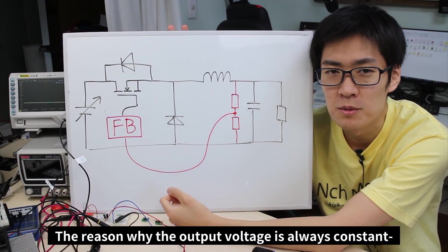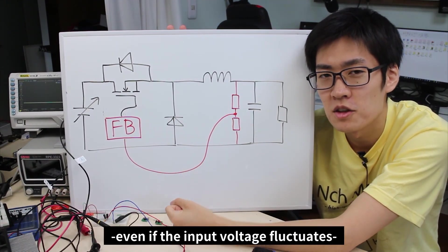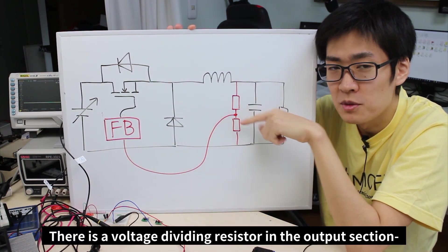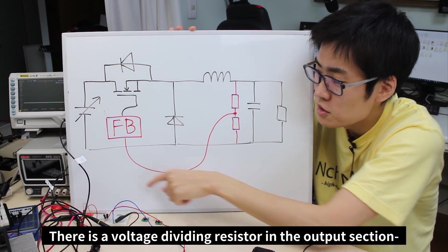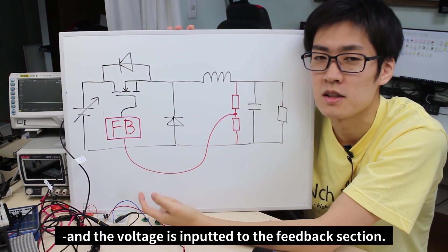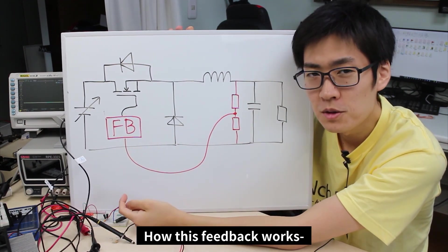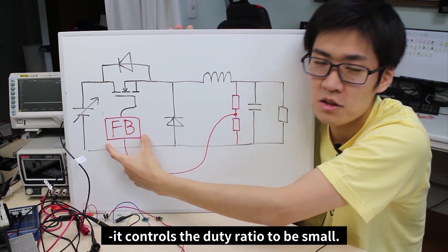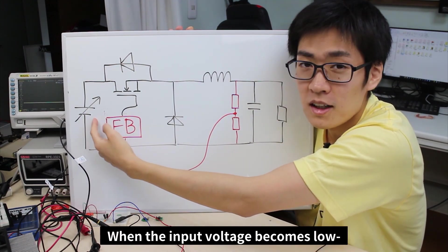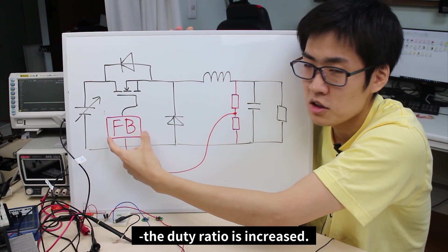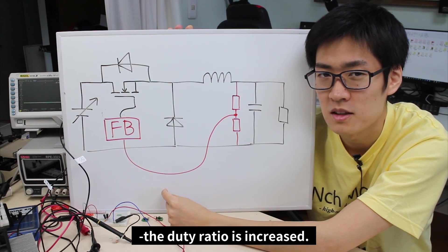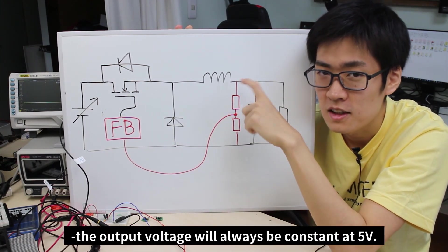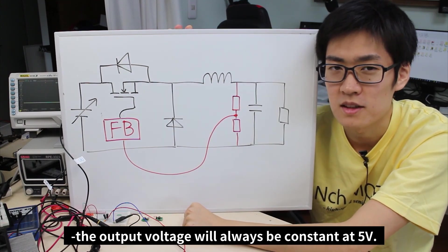The reason why the output voltage is always constant, even when there's fluctuation in the input voltage, is because we have feedback. There is a voltage dividing resistor in the output section, and the voltage is inputted to the feedback section. When the input voltage becomes higher, it controls the duty ratio to be small. And when the input voltage becomes low, the duty ratio is increased. Thus, even if the input voltage fluctuates, the output voltage will always be constant at 5 volts.